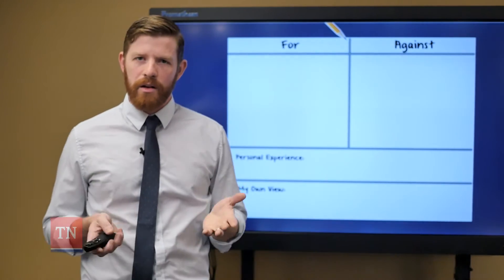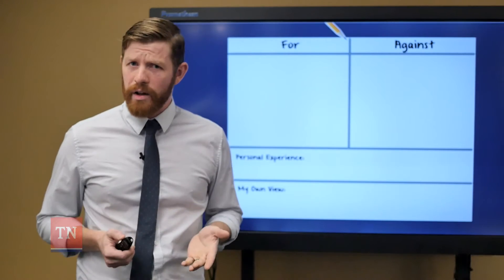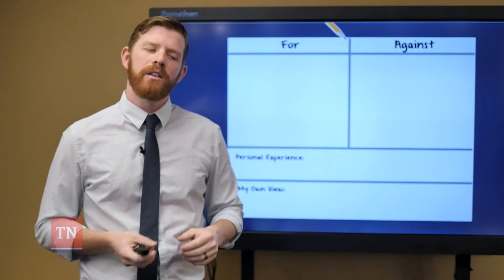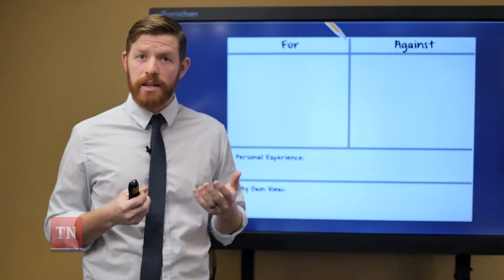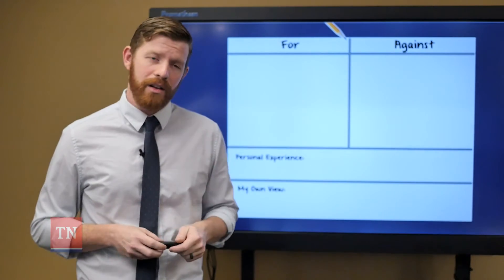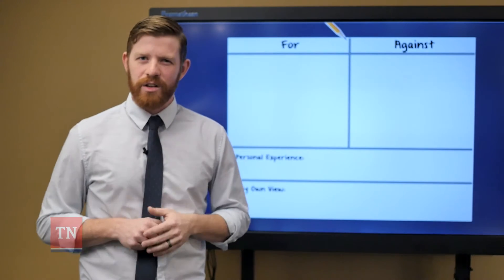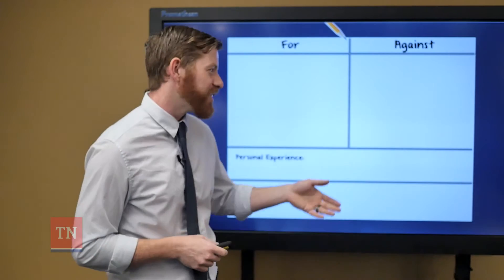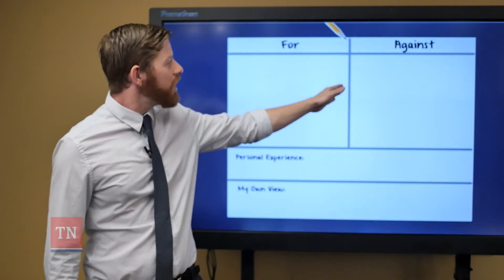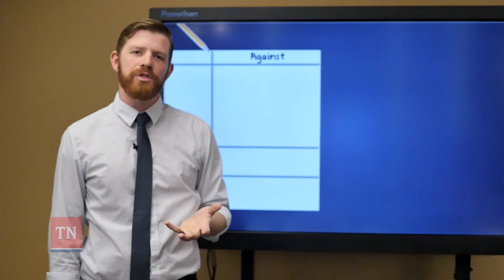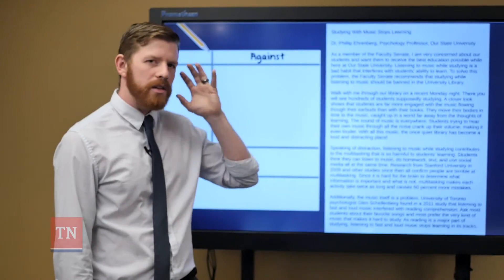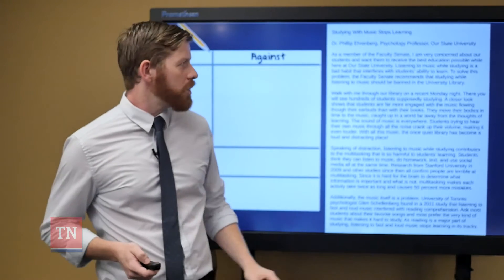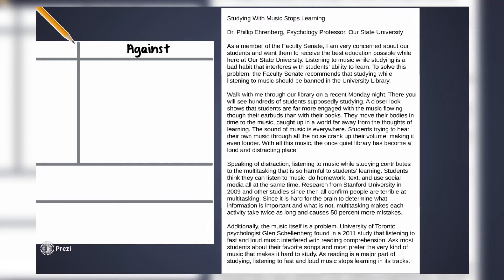Just like we talked about in the first video, before you actually write your essay you're going to read through a text passage that supports a subject and another text passage that is against it. Let's look at an example from our friends over at New Readers Press — thank you for letting us use this for our videos. The example is about whether or not people should be able to use music to study in the school library, or whether it's too distracting.